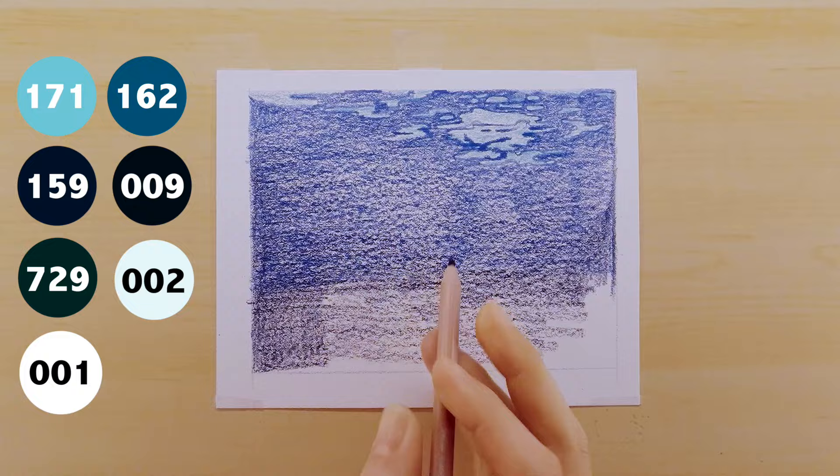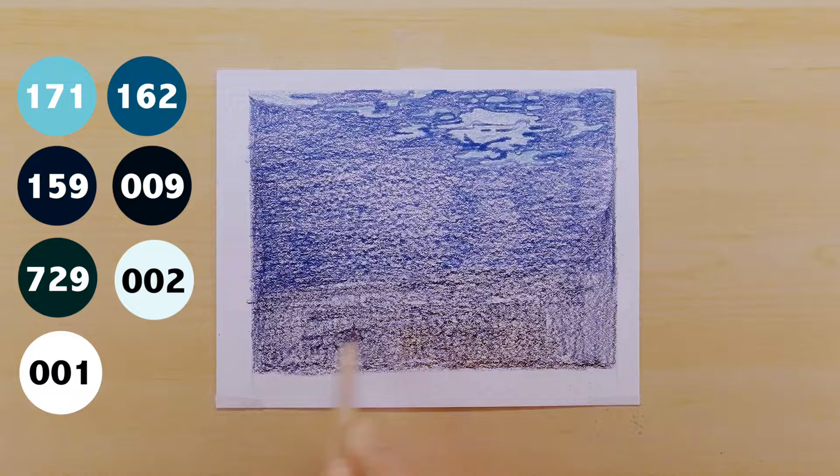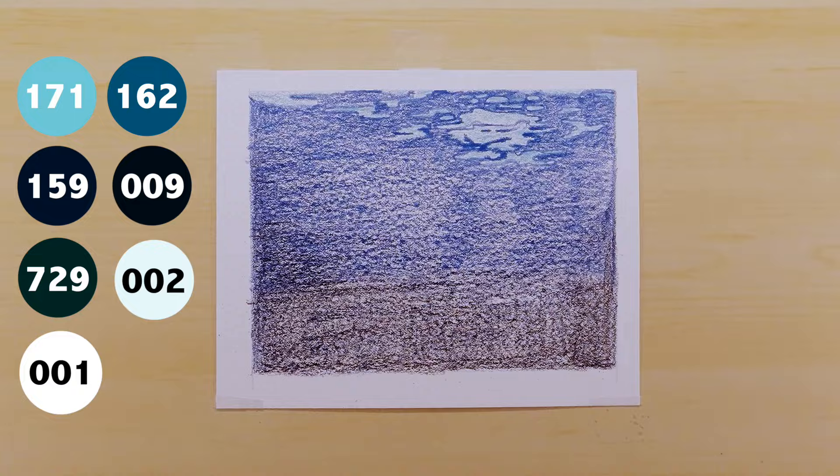You want to get a really nice layer of this and then you're going to switch to your 009 black pencil and you're going to rework the gradient all the way down to the bottom and really try to create the darkest black at the bottom.